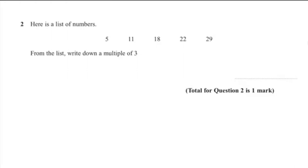Question 2: here is a list of numbers — 5, 11, 18, 22, 29. From the list, write down a multiple of 3. The only multiple of 3 from the list is 18, so that's our answer.